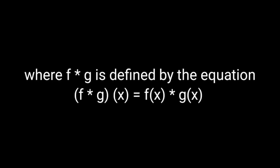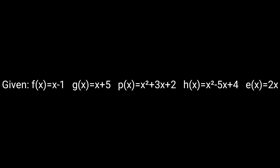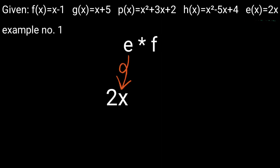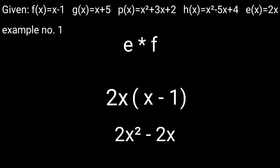The third operation on functions is the product of two functions, where f times g is defined by (f · g)(x) = f(x) · g(x). Given f(x) = x − 1, g(x) = x + 5, p(x) = x² + 3x + 2, h(x) = x² − 5x + 4, and e(x) = 2x. Example 1: e times f — substitute e with 2x and f with x − 1. Distribute 2x: the final answer is 2x² − 2x.